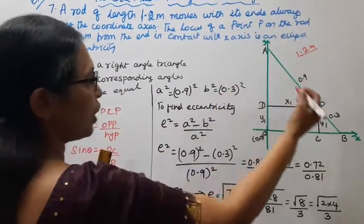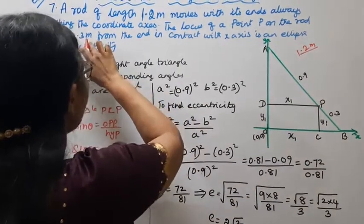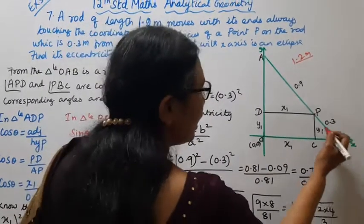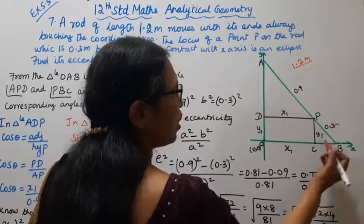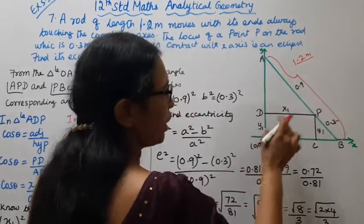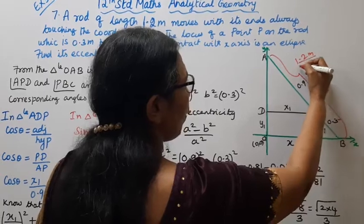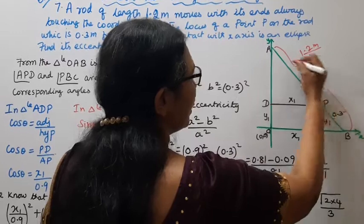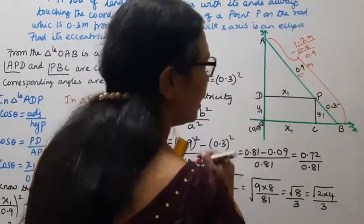The locus of a point P on the rod, which is 0.3 meters from the end in contact with x-axis. Then from point B it is 0.3 meters. This is AB, it is 0.9 meters, PB is 0.3 meters.